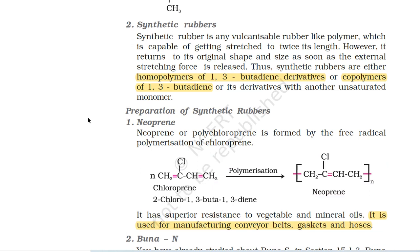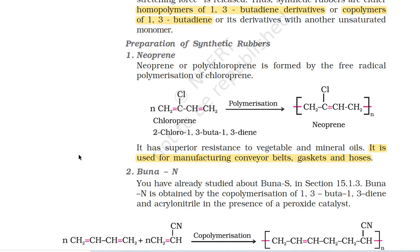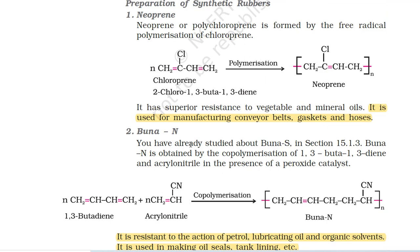Synthetic Rubbers. Synthetic rubber is any vulcanizable rubber-like polymer which is capable of getting stretched to twice its length. However, it returns to its original shape and size as soon as the external stretching force is released. Thus, synthetic rubbers are either homopolymers of 1,3-butadiene derivatives or copolymers of 1,3-butadiene or its derivatives with another unsaturated monomer. Preparation of Synthetic Rubbers. First, Neoprene. Neoprene or polychloroprene is formed by the free radical polymerization of chloroprene (2-chloro-1,3-butadiene). It has superior resistance to vegetable and mineral oils. It is used for manufacturing conveyor belts, gaskets and hoses.